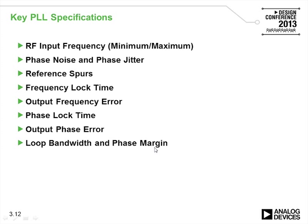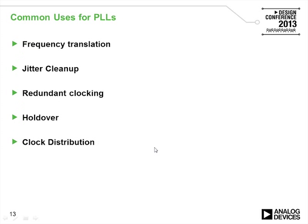Common uses for PLLs include frequency translation — going from one frequency to another — jitter cleanup, redundant clocking systems with holdover capability, and clock distribution. For jitter cleanup, a noisy clock applied to a PLL uses the band-limiting of the loop filter to remove a lot of noise from the signal.